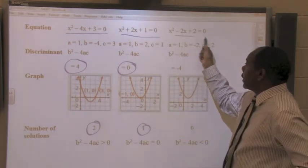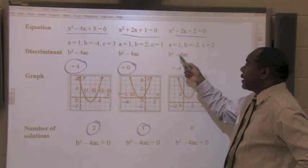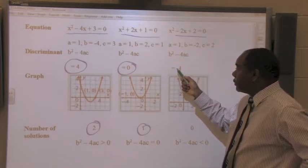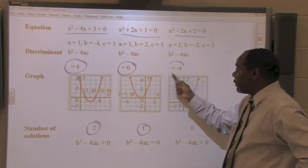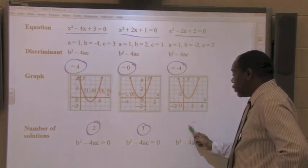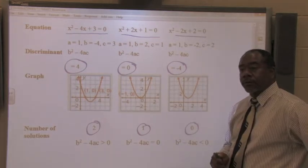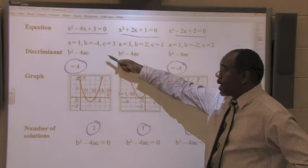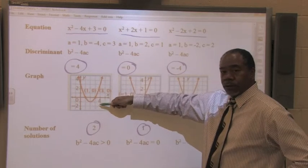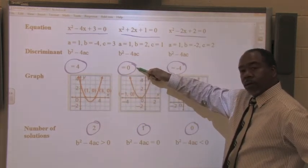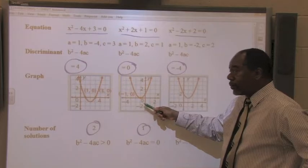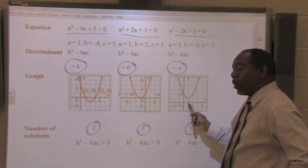If you take a look at the A, B, and C values, and evaluate the discriminant, and you get a negative number, there will be no real solutions. So you want to remember, positive, two solutions. Zero, one solution. Negative, no real solutions.